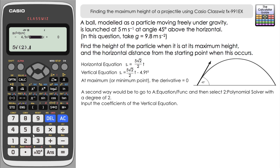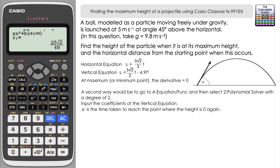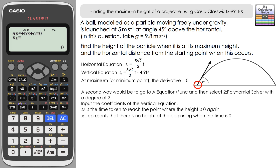Be careful inputting — you may need to close brackets; it's in line mode but the fraction button still works. Press equals and there's no constant term, so press equals to confirm. The first result is 25√2/49 — pressing SD gives approximately 0.72 seconds — that's when the ball completes its journey and returns to the ground. Pressing equals again confirms the second solution is zero, which is the start time as expected.